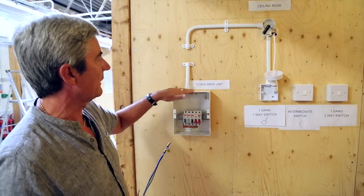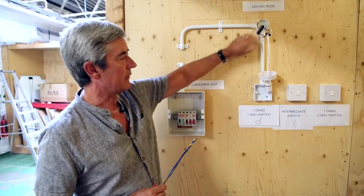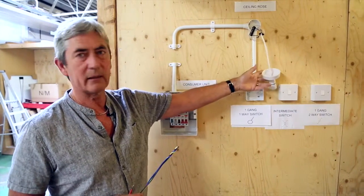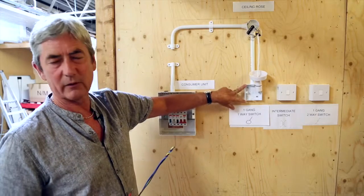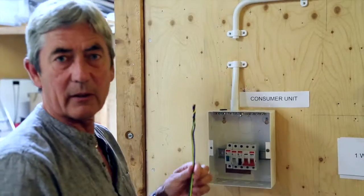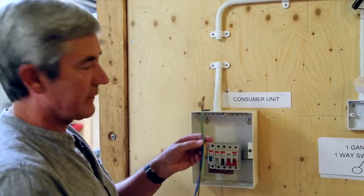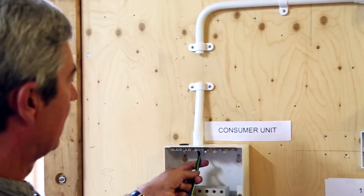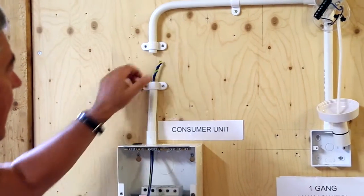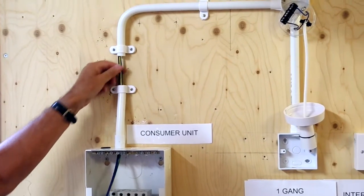We have here the consumer unit to the ceiling rose. This is the pendant to the back box for the one-way switch. The first part of the process will be to pass our cables through the conduit. For convenience we connect them all together and pass them through the conduit.